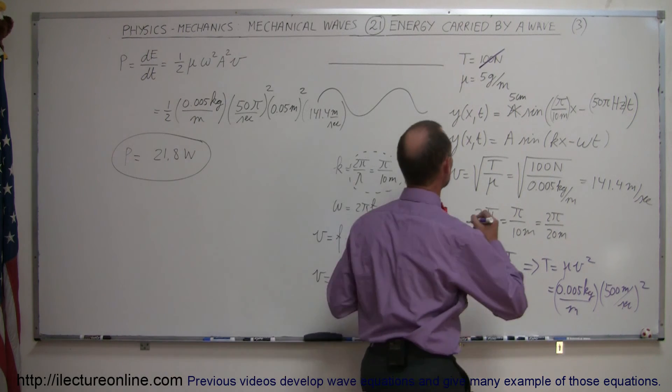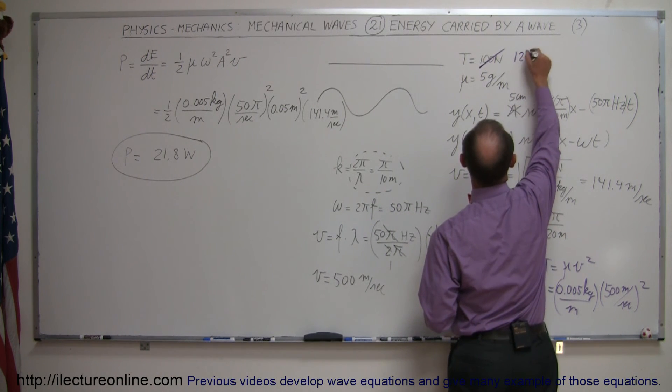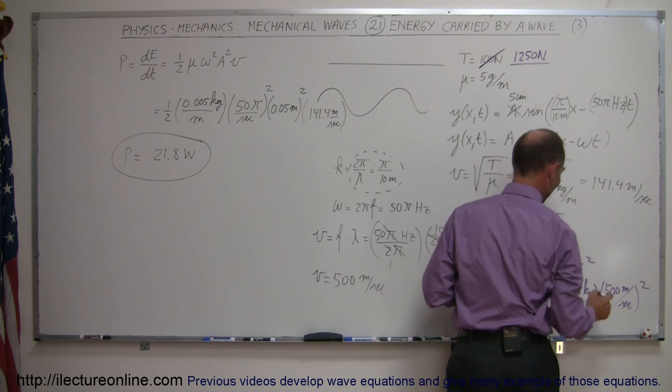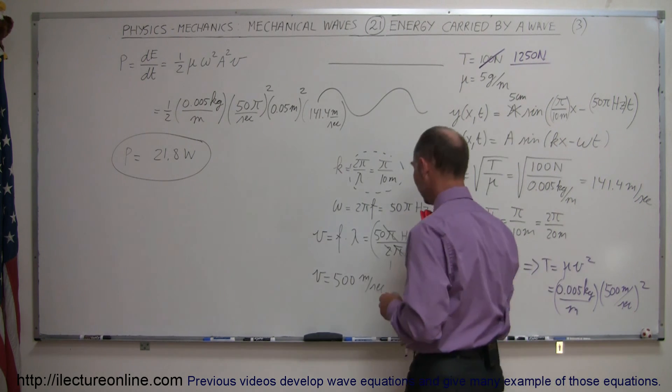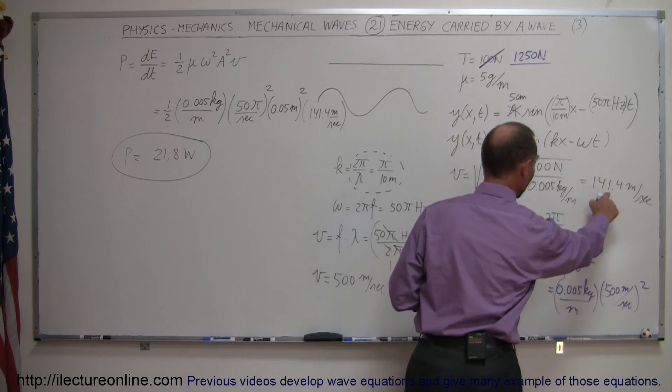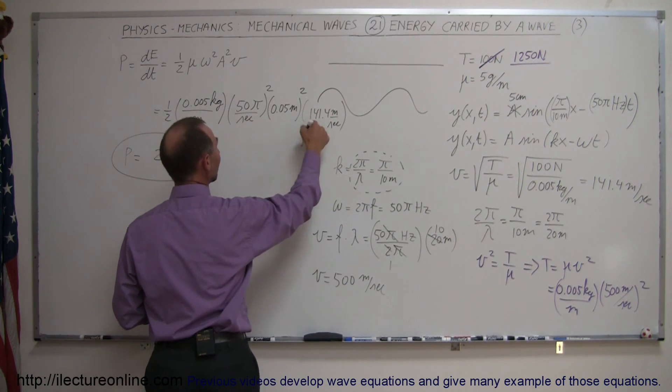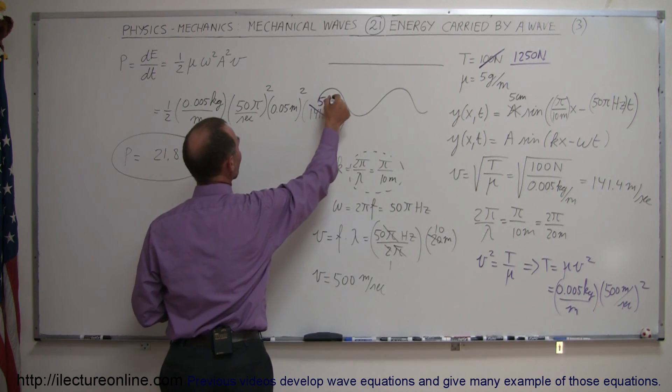So, if I had actually used a tension of 1250 Newtons, then the velocity would have been 500 meters per second, instead of what I came up with, 141.4.